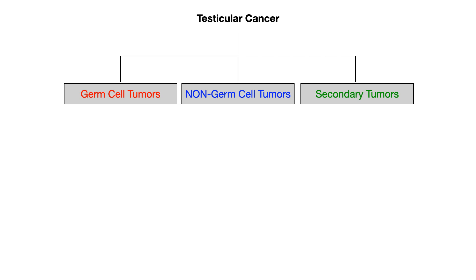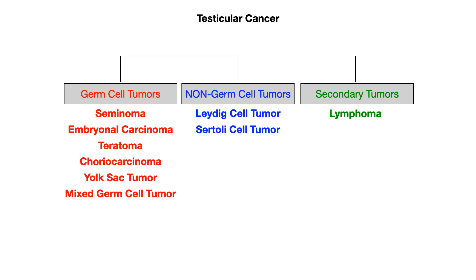When it comes to testicular cancer, the first thing that's helpful is to establish a way to categorize these different types of cancers, because there's a lot and we should do that in three different categories. There are germ cell tumors shown in red, non-germ cell tumors shown in blue, and one type of secondary tumor shown in green.